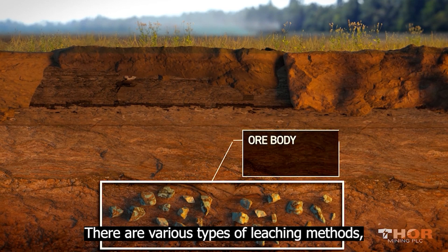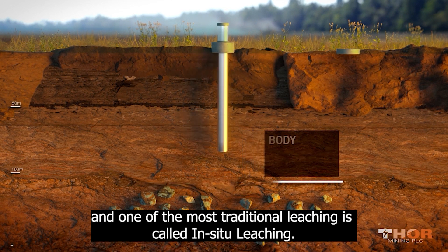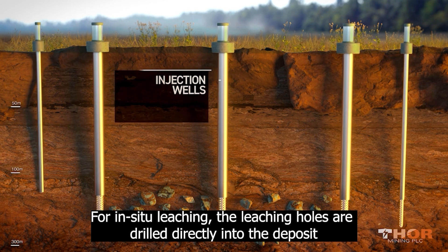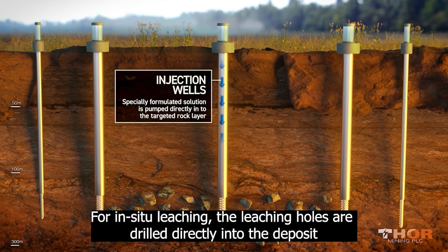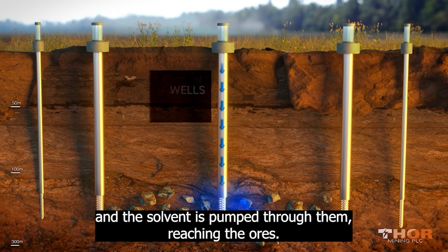There are various types of leaching methods. Each has its pros and cons. And one of the most traditional leaching is called in-situ leaching. For in-situ leaching, the leaching holes are drilled directly into the deposit, and the solvent is pumped through them reaching the ores.